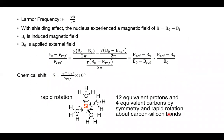The Larmor frequency is dependent on the strength of the applied magnetic field and on the individual nucleus. Since the applied magnetic field is kept constant, the frequency is only dependent on the gyromagnetic ratio, specific to that nucleus type. With the shielding effect, the nucleus experiences a magnetic field B equal to B₀ minus Bᵢ, where B₀ is the applied external magnetic field from the spectrometer and Bᵢ is the induced magnetic field from the particular chemical environment of the nucleus.